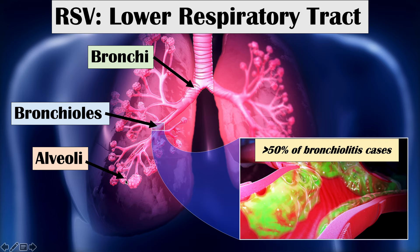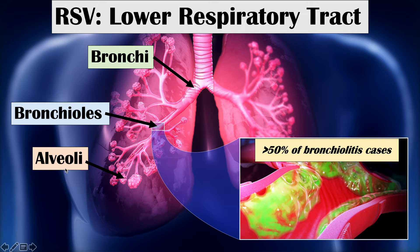RSV actually causes at least 50% of bronchiolitis cases. Moving further into the lungs, we reach the alveoli — those microscopic air sacs — and RSV can affect the alveoli causing pneumonia. So RSV can cause bronchitis, bronchiolitis, and pneumonia, representing a wide range of lower respiratory tract issues.